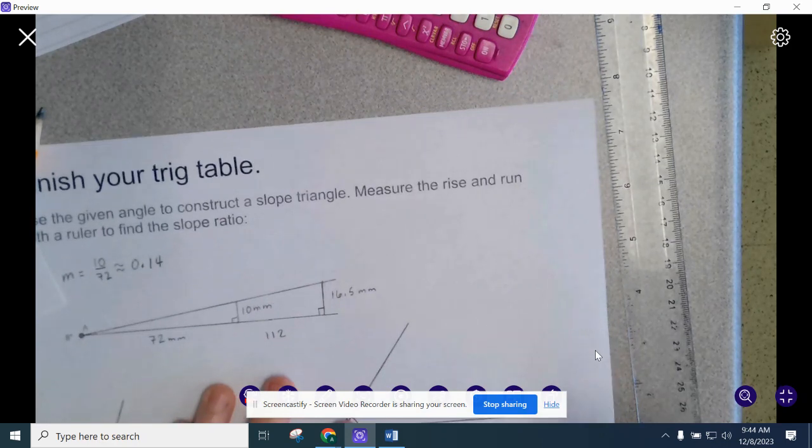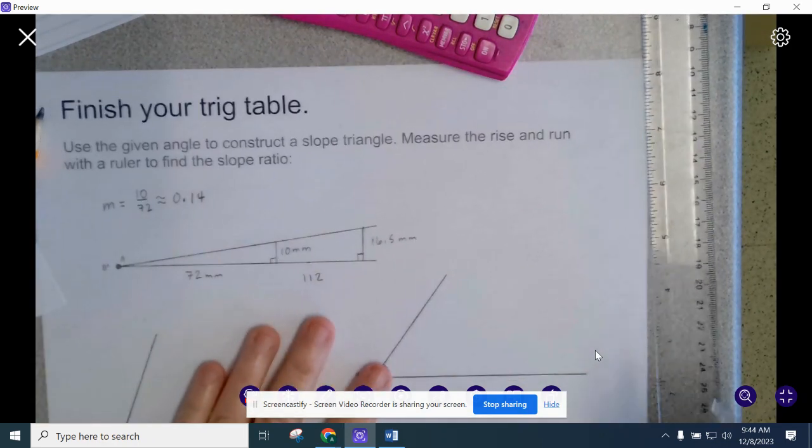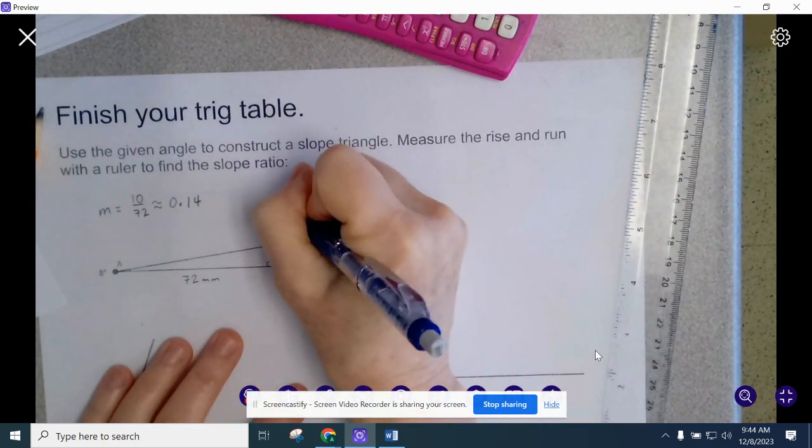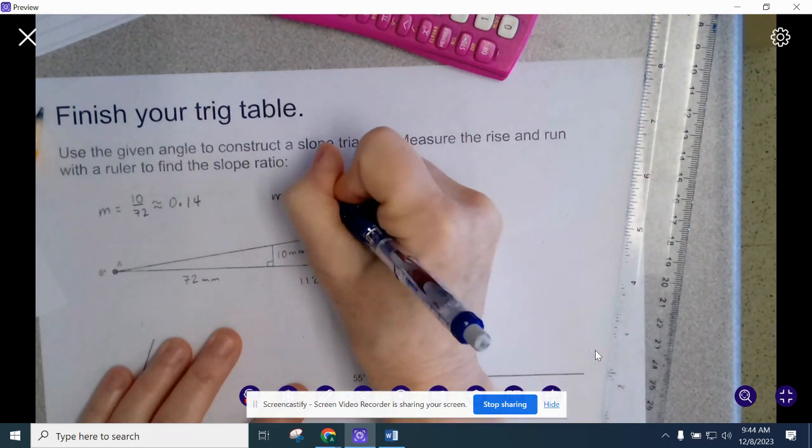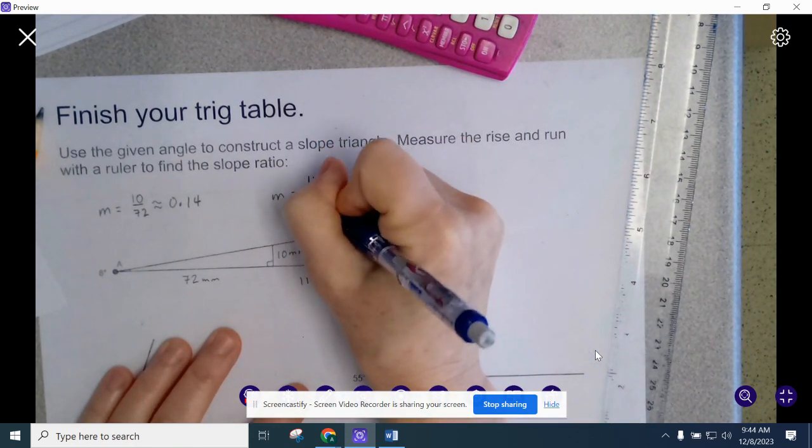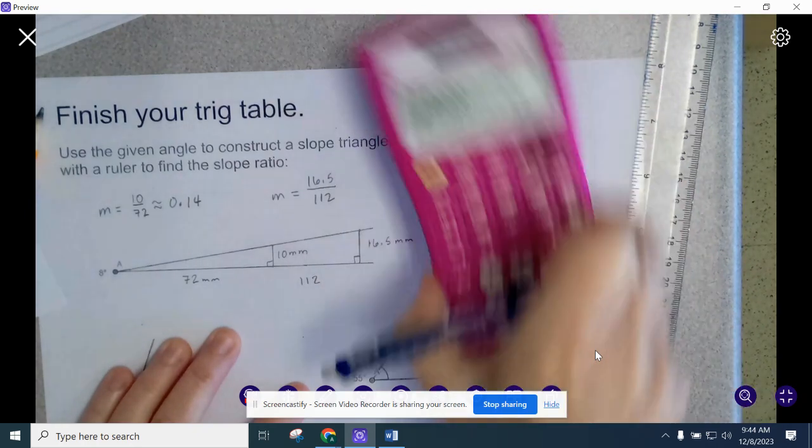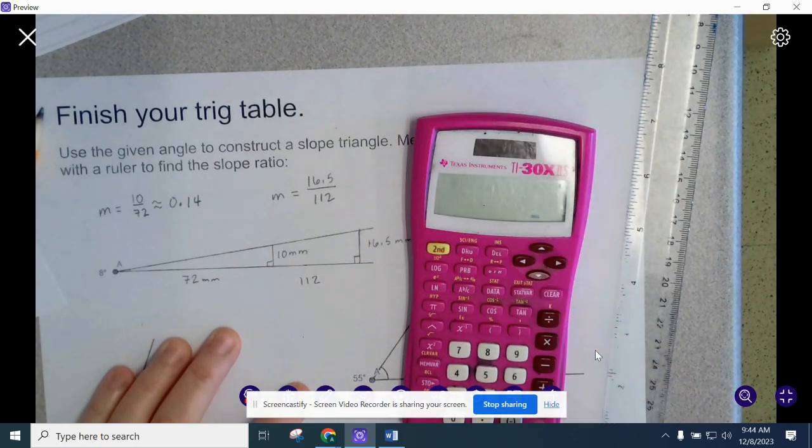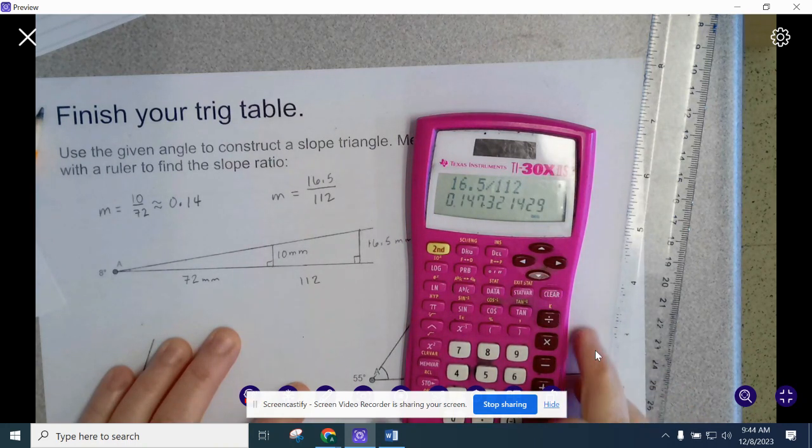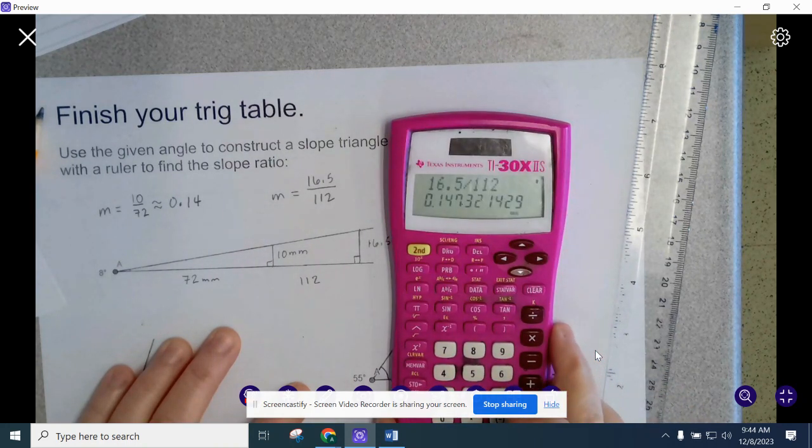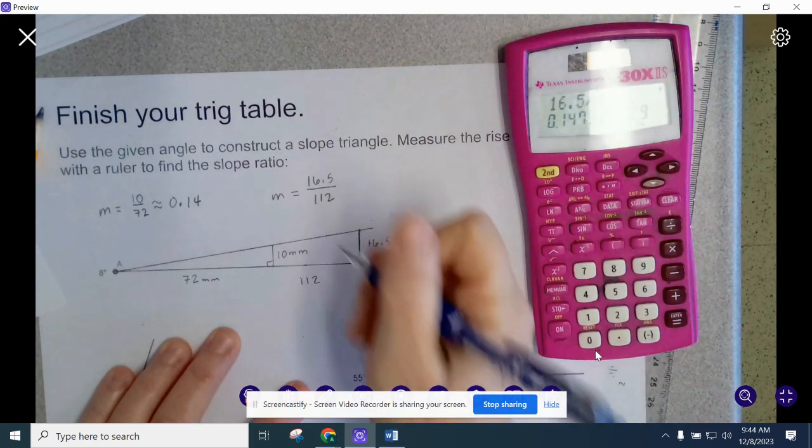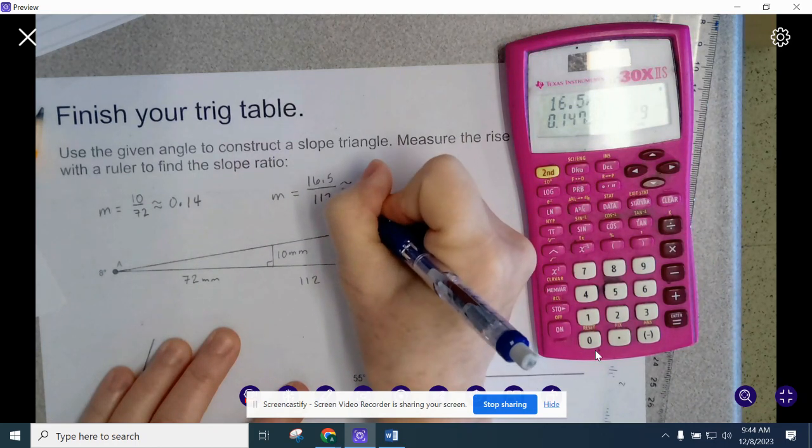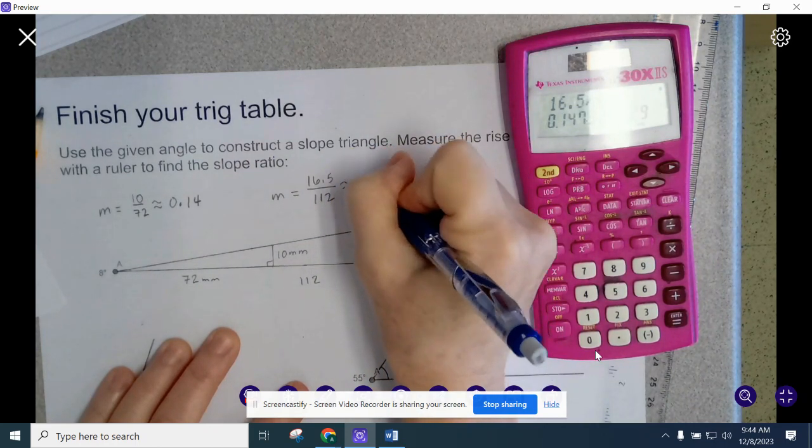Alright, so now I'm going to do my slope again. It's going to be rise over run. And let's see what I get. So I'll put that into my calculator. I have 16.5 millimeters divided by 112 millimeters. And I got 1.47. Ooh, that goes to 1, 0.15. I was hoping it would be 0.14. But that's 0.15. Those aren't too far off.